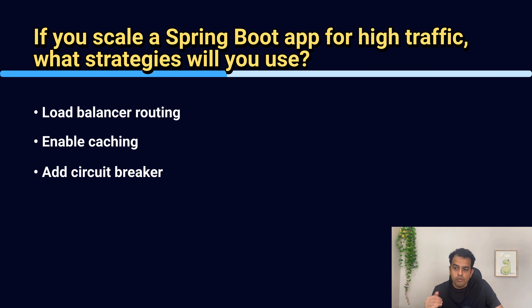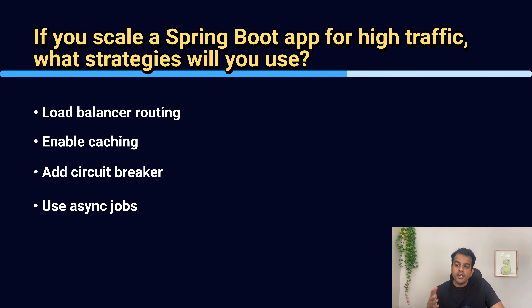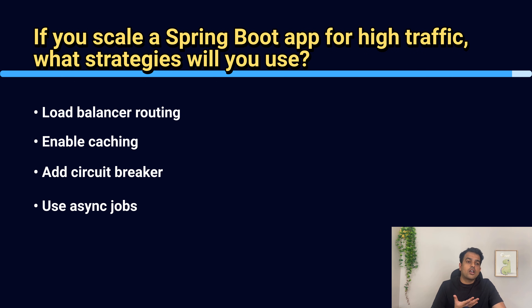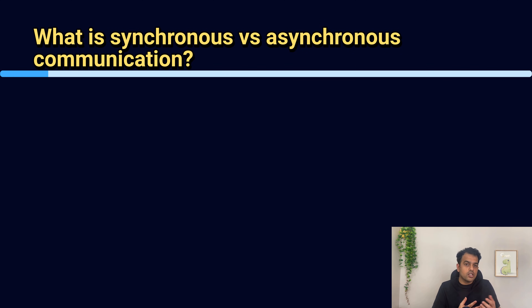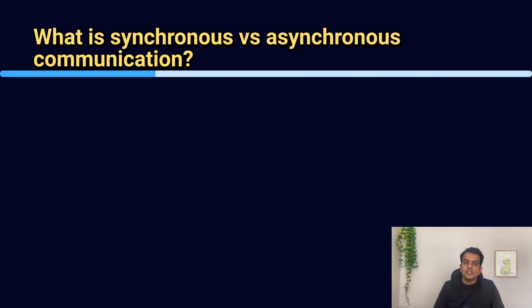The next question is: what is synchronous and asynchronous communication? These are the two ways microservices can communicate with each other. For synchronous communication, there are options like Feign client, WebClient, or RestTemplate. For asynchronous communication, you use Kafka or RabbitMQ — a messaging queue. The main difference is that synchronous waits for the response, while asynchronous doesn't wait. Messages are processed one by one when the response arrives. Async works using events and is faster for jobs, but it needs good monitoring.